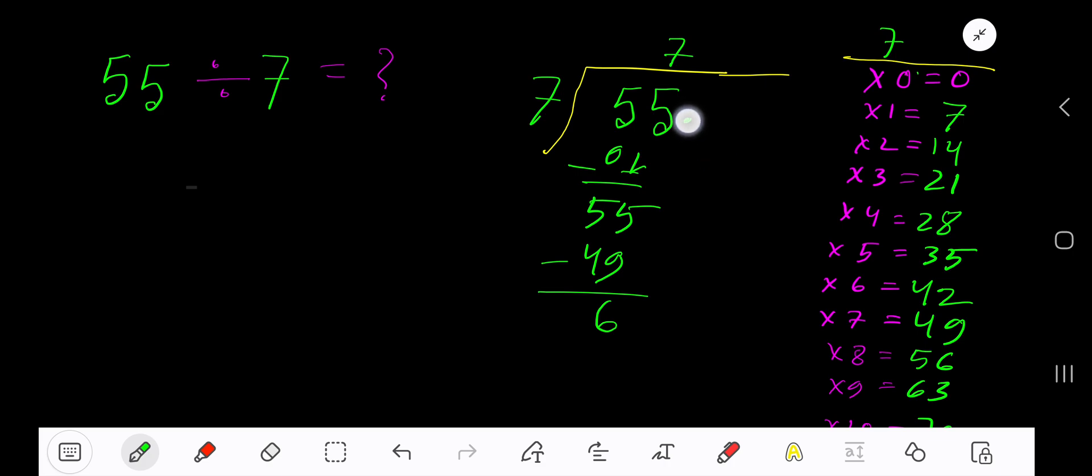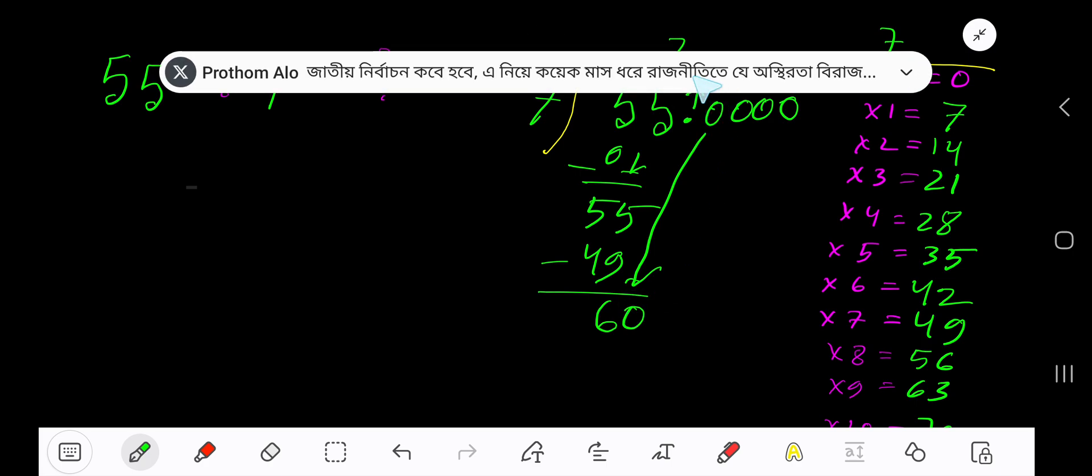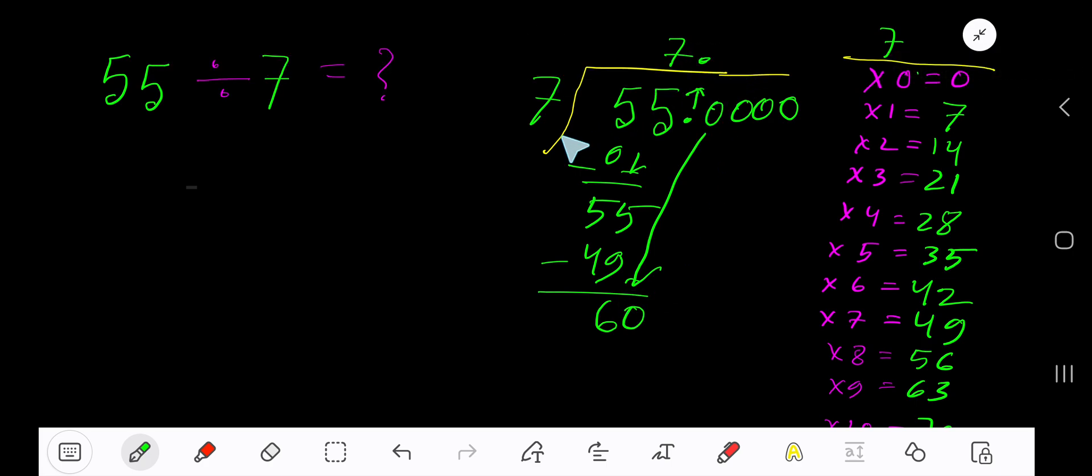If you want to write your answer in decimal form, then take your decimal, add number of zeros, bring down the first zero. Before the zero there is a decimal—the decimal must come to the quotient directly. 7 goes into 60 how many times? 8 times. 8 times 7 gives you 56, subtract.